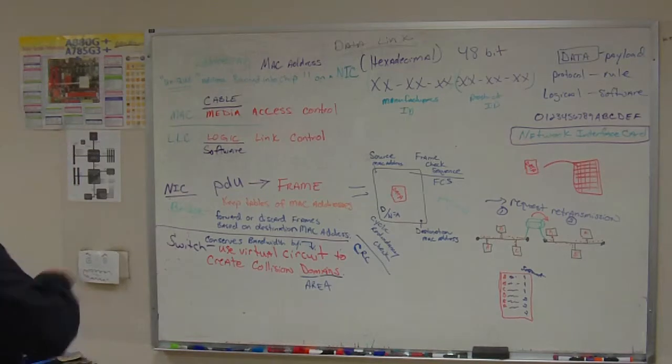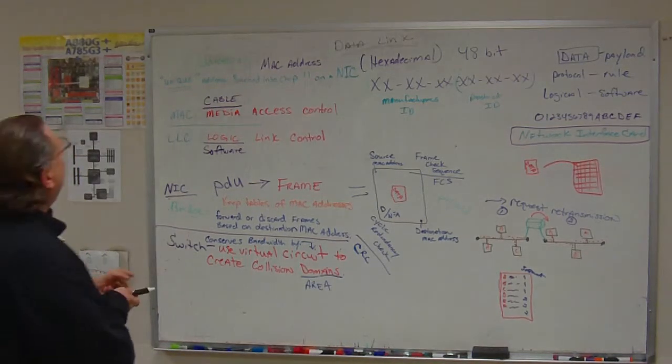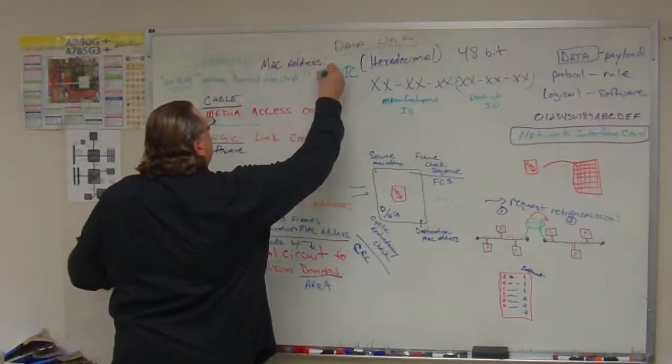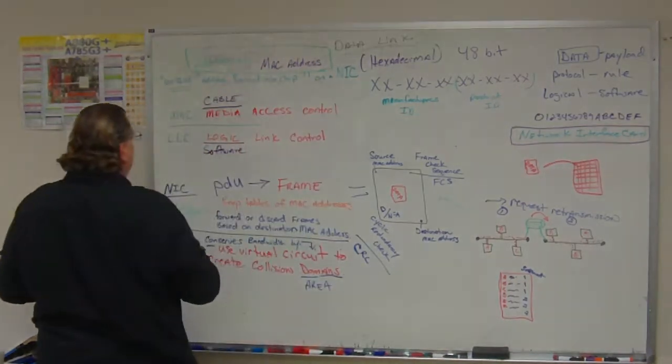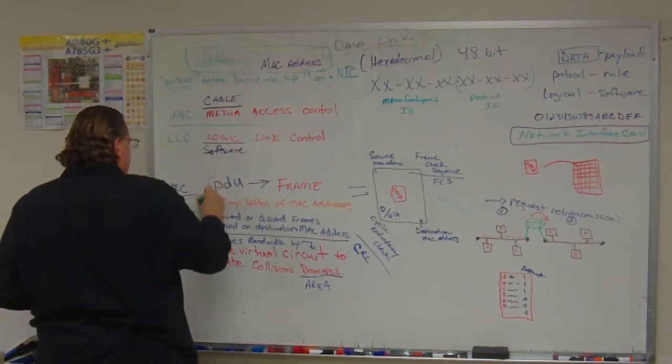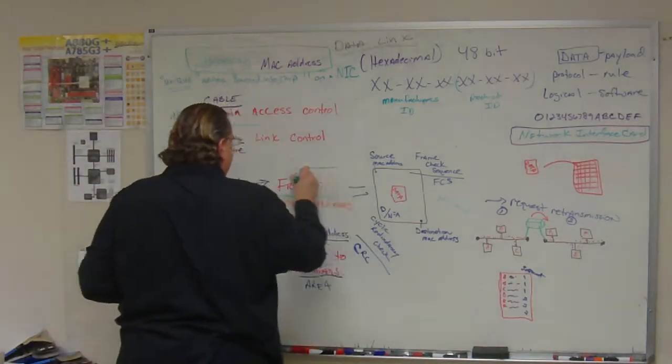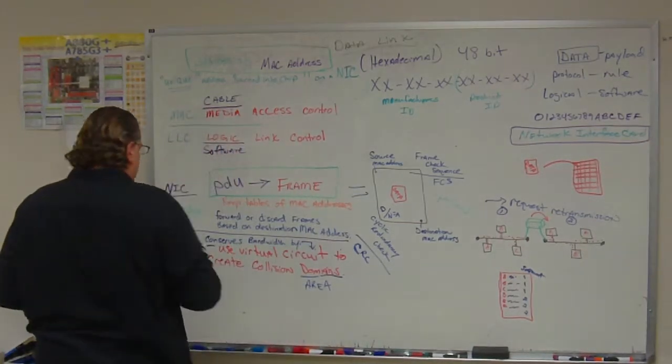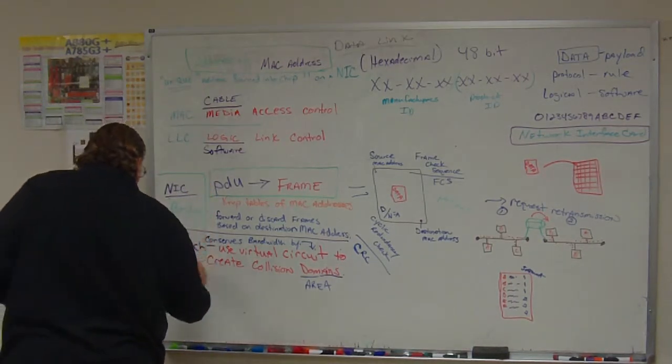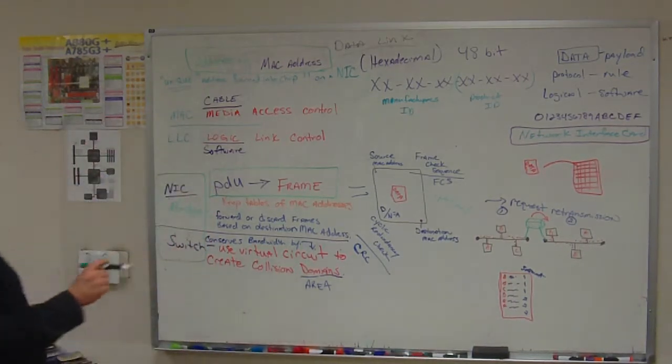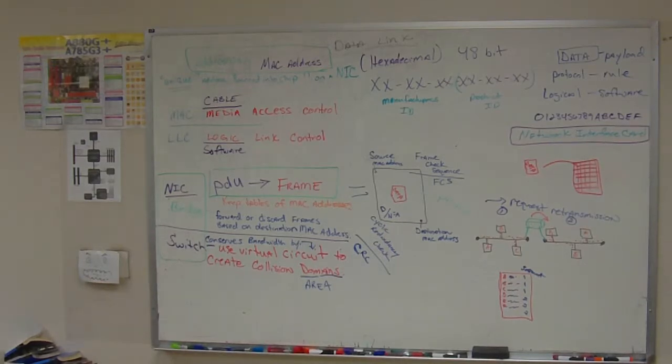And I'm going to say the addressing, I'm just going to mark it up so we can see it for the rest of the day, is the MAC address. The PDU is the frame. And the hardware that functions at this layer, the bridge and the switch. Alrighty.